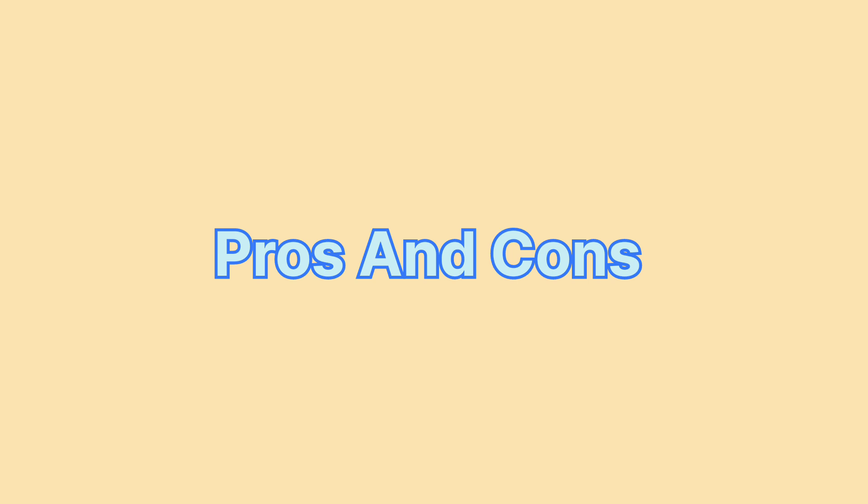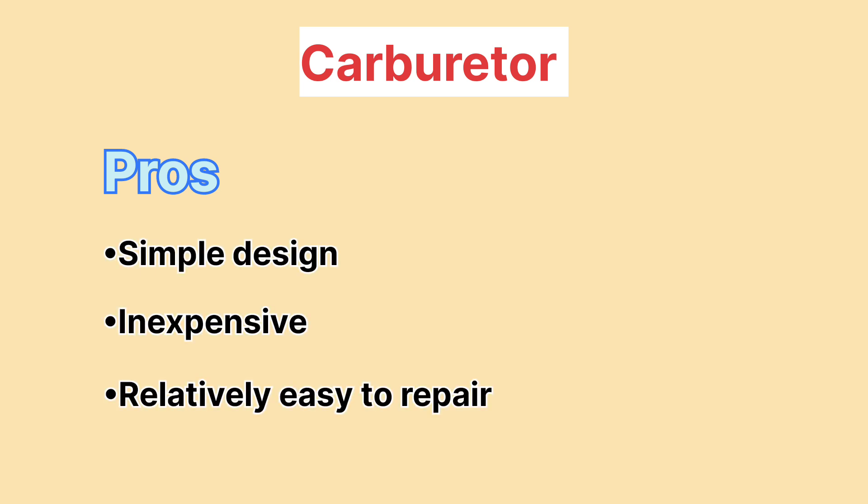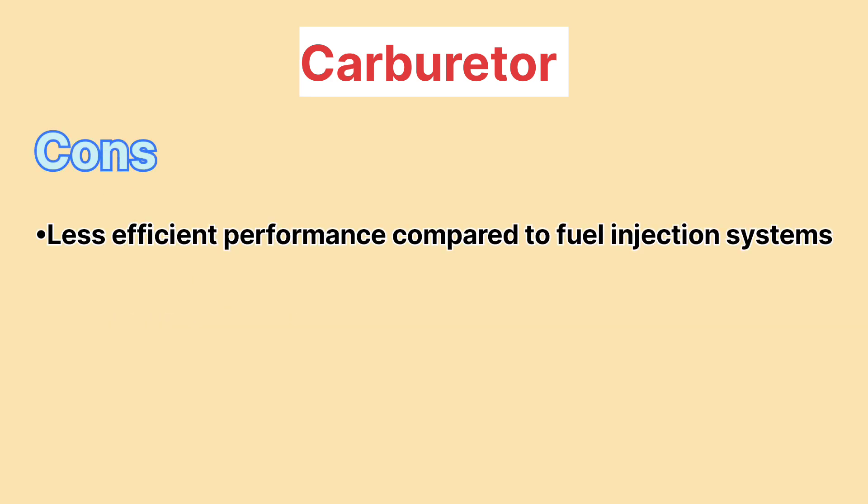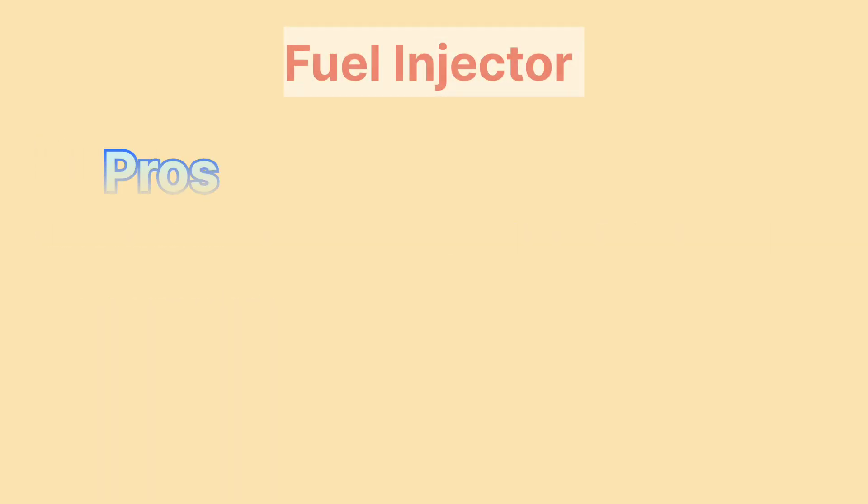Let's take a look at the pros and cons of each system. First, carburetors: the main advantages are that they're simple, inexpensive, and relatively easy to repair, especially in older vehicles. However, they don't perform as efficiently as fuel injection systems. They waste more fuel, produce higher emissions, and need regular adjustments to stay in top shape.